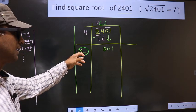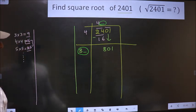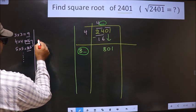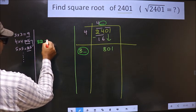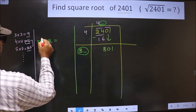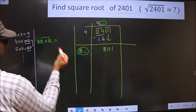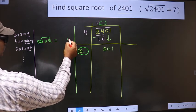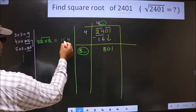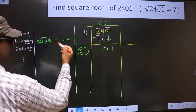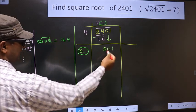So let us find this number. If I take 2 here into 2, these two numbers should be same. 2 into 2, 4. 2 into 8, 16. 164 is far away from 8, 0, 1.